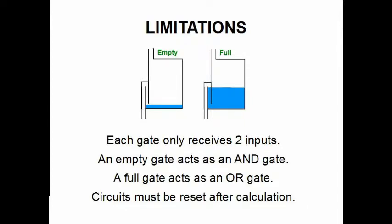The full OR gates can only receive up to two inputs. Any more will cause multiple outputs. Empty siphon gates simulate AND gates since two inputs are required to trigger the siphon output. Full siphon gates simulate OR gates since any input would trigger the siphon output. Since the water storage holds a state, circuits containing these gates must be reset after each calculation. We now demonstrate the homemade siphon gate and show the above properties.